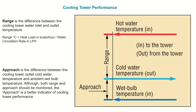Range can also be calculated using this formula: range is equal to heat load in kilocalories per hour divided by water circulation rate in liters per hour. The second parameter is approach.